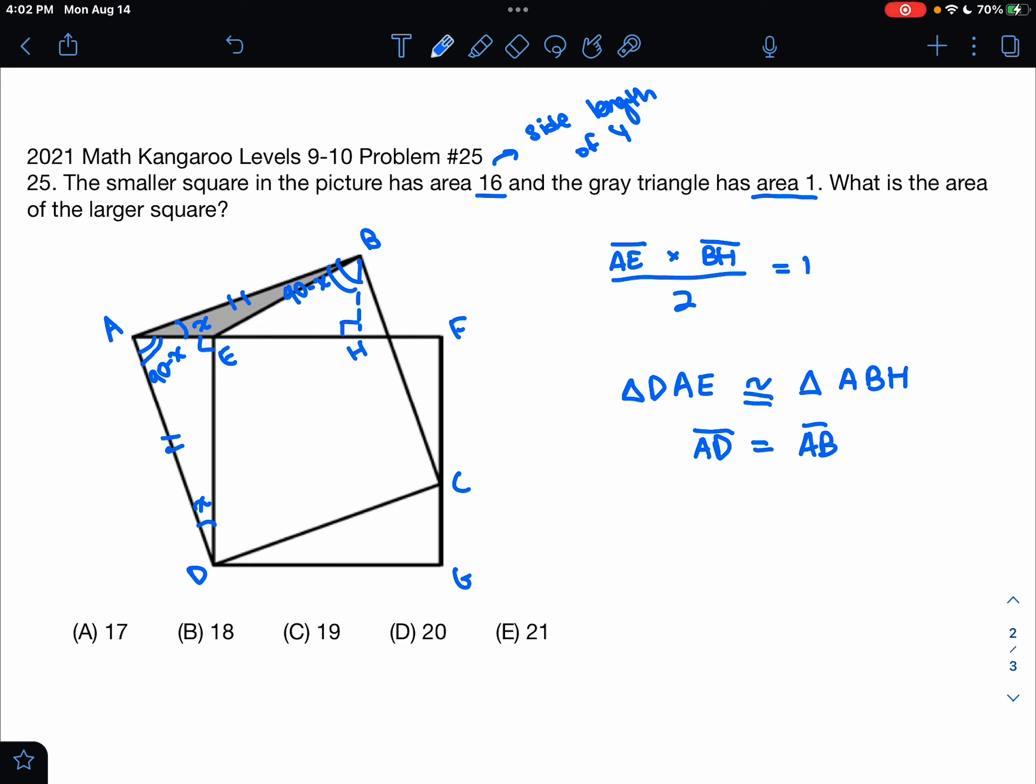And since we know that DE must equal AH must equal 4, we can see that the remaining side lengths AE must equal side length BH. Again, the two triangles are congruent so all the corresponding sides and angles are equal.